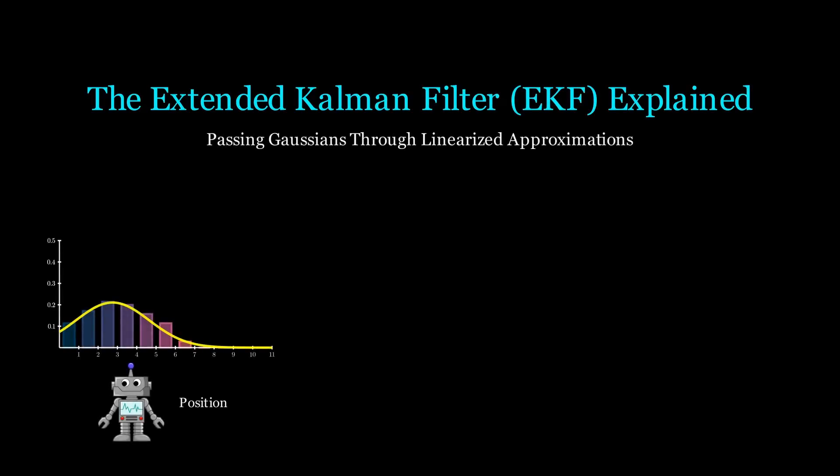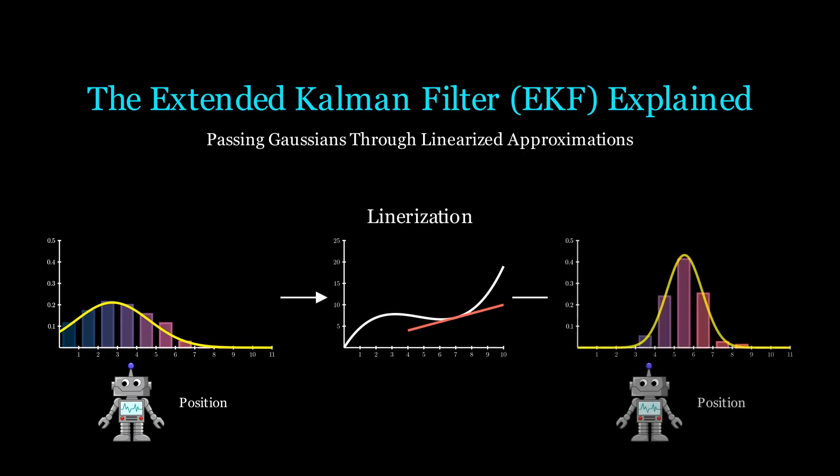Welcome. The extended Kalman filter is a very famous implementation of the Bayes filter. The EKF is widely used because it extends the Kalman filter to a more general setting by handling nonlinearities. Let's see how it's derived from the Bayes filter and how it relates to the Kalman filter.